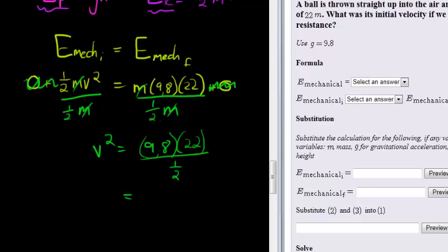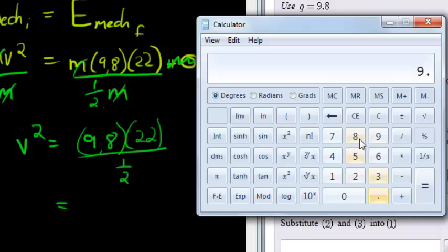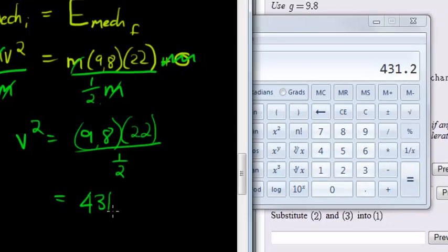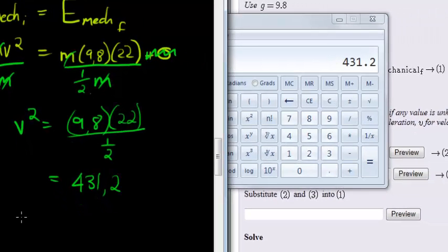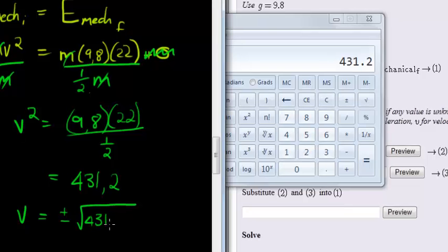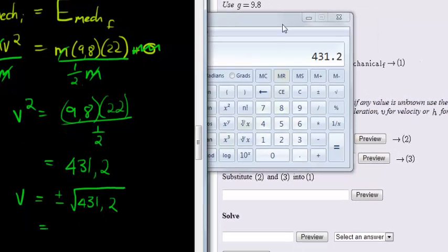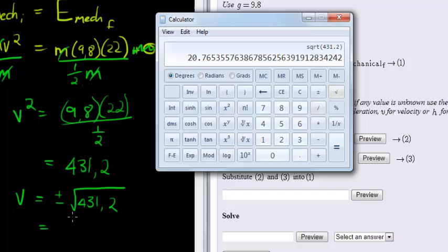What is that? 9.8 times 22 is equal to 215 divided by 0.5. There we go, the velocity squared is 431.2, which means that the velocity is equal to the square root plus minus the square root of 431.2, which gives me an answer of 20.77.